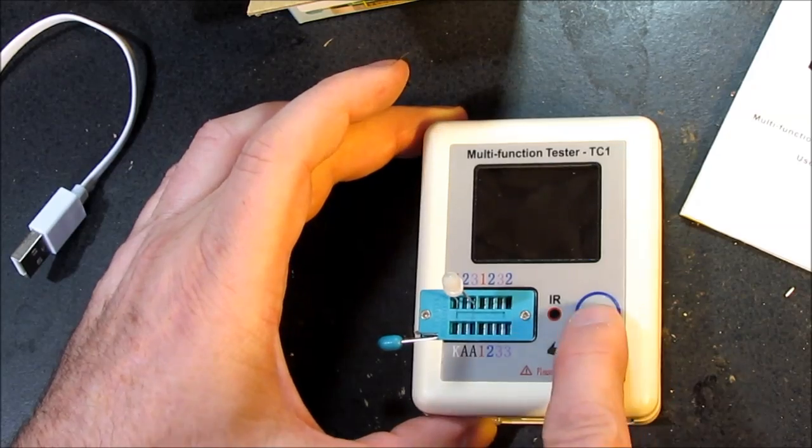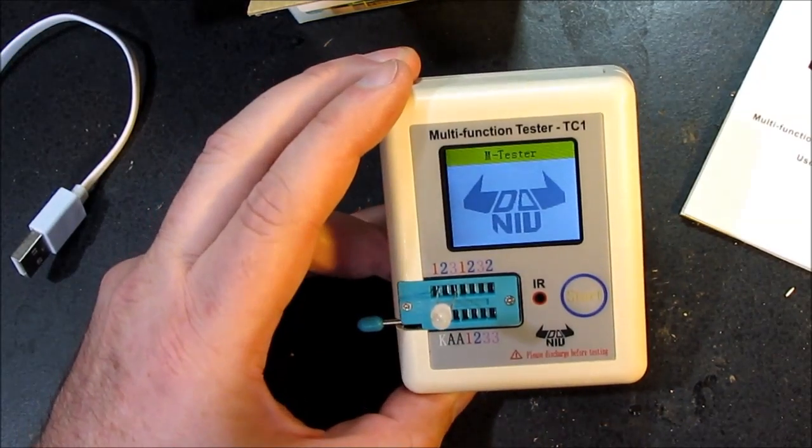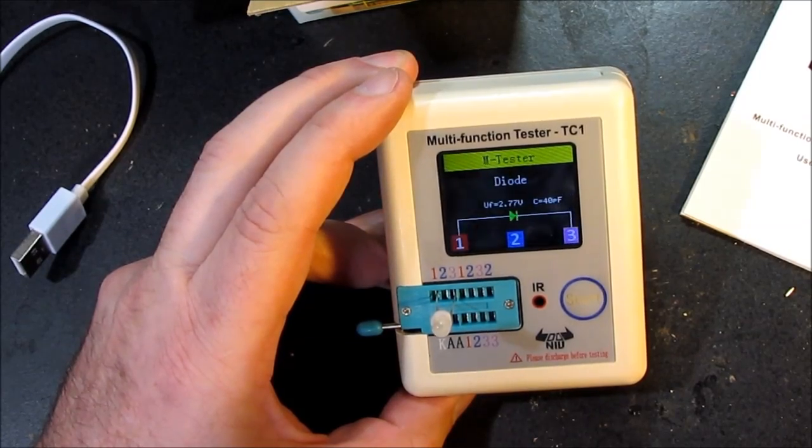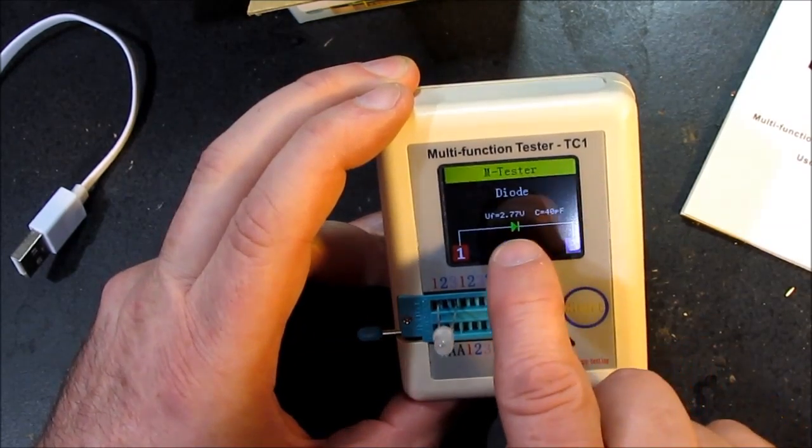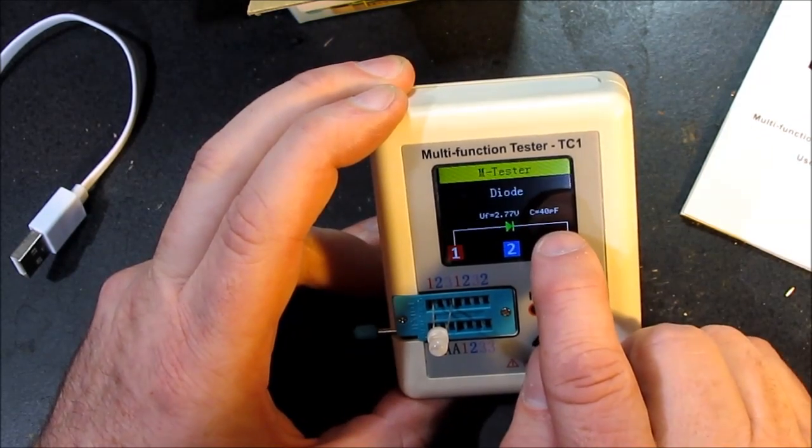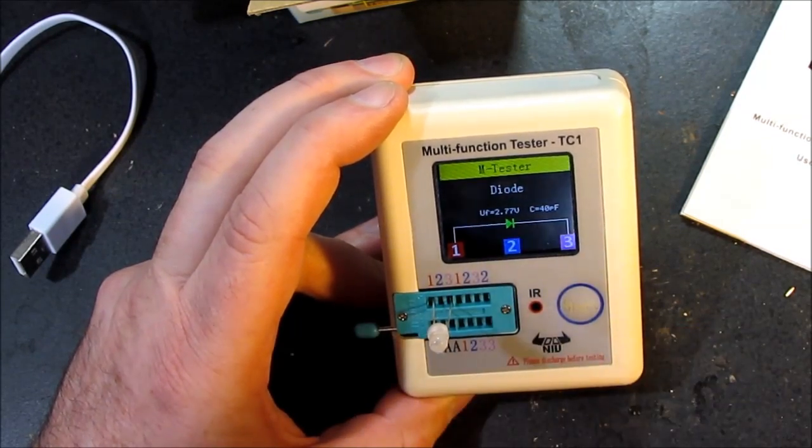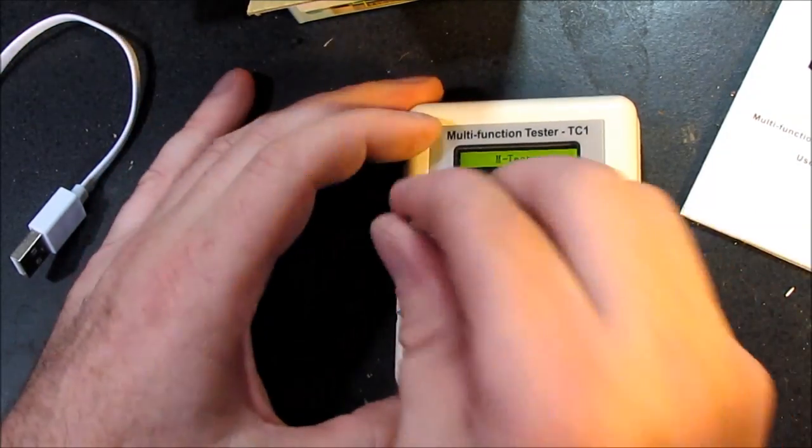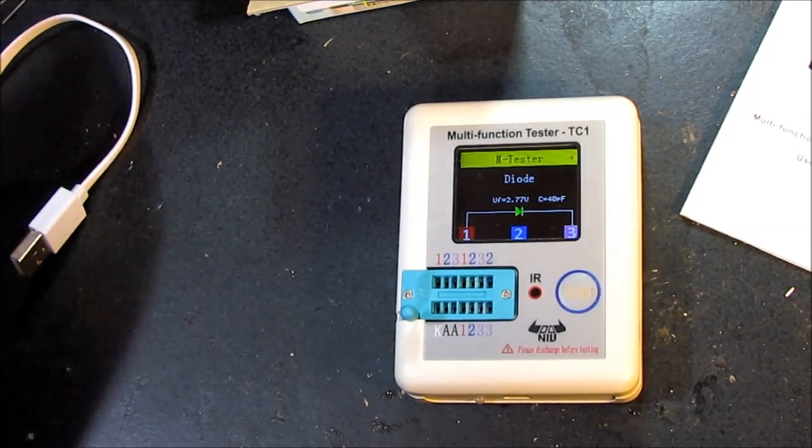Then we hit the magic button. What do we get? Tester testing. Oh I see some lights blinking. This is a diode! 2.77 volts. With a look, it even gives the capacitance: 40 picofarads. That's pretty cool. You always want to know what your diode capacitances are.